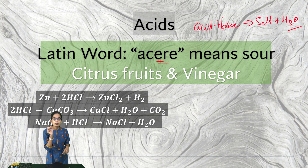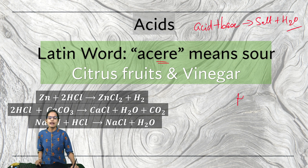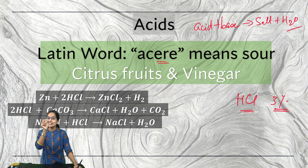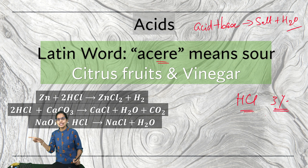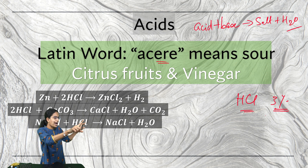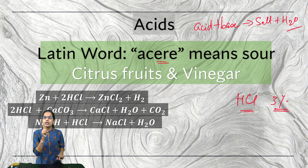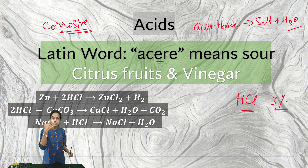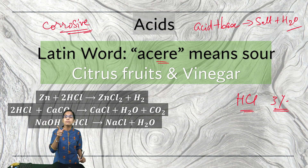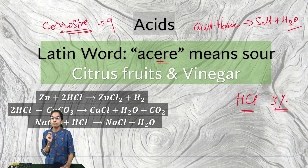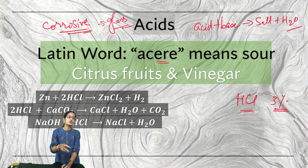Even in laboratories we use dilute acid. If you are using HCl in a laboratory, you might have heard of a 3% HCl solution, which means it is diluted to only 3%. Also, if you visit a chemistry lab, you would see most acids on the shelf are stored in glass bottles. Because acids are corrosive, they have a tendency to corrode and therefore cannot be stored in plastic containers. The only non-reactive container suitable here is glass.